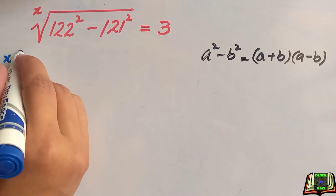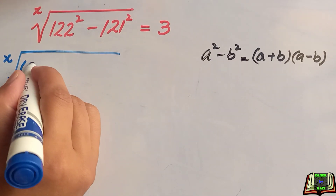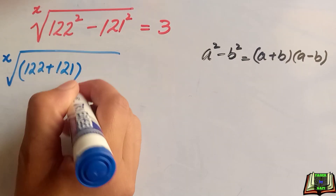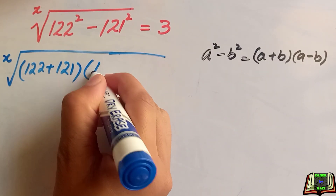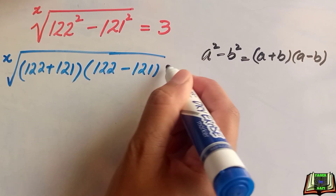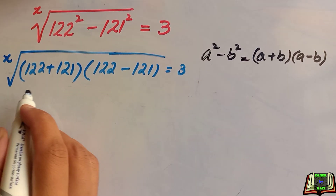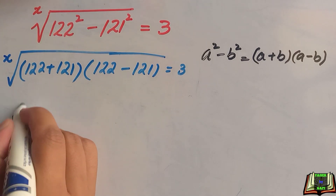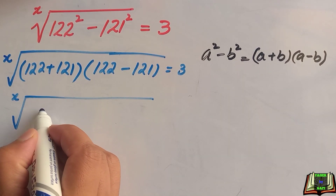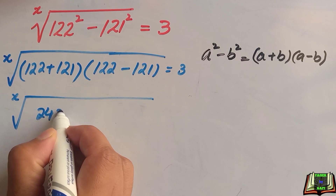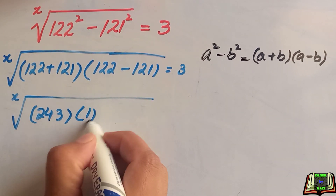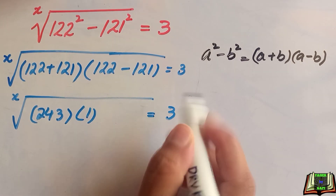So this will be equal to (122 + 121)(122 − 121) = 3. After adding 122 and 121 we get 243, and after subtracting these two numbers we get 1, so 243 times 1 is equal to 3.